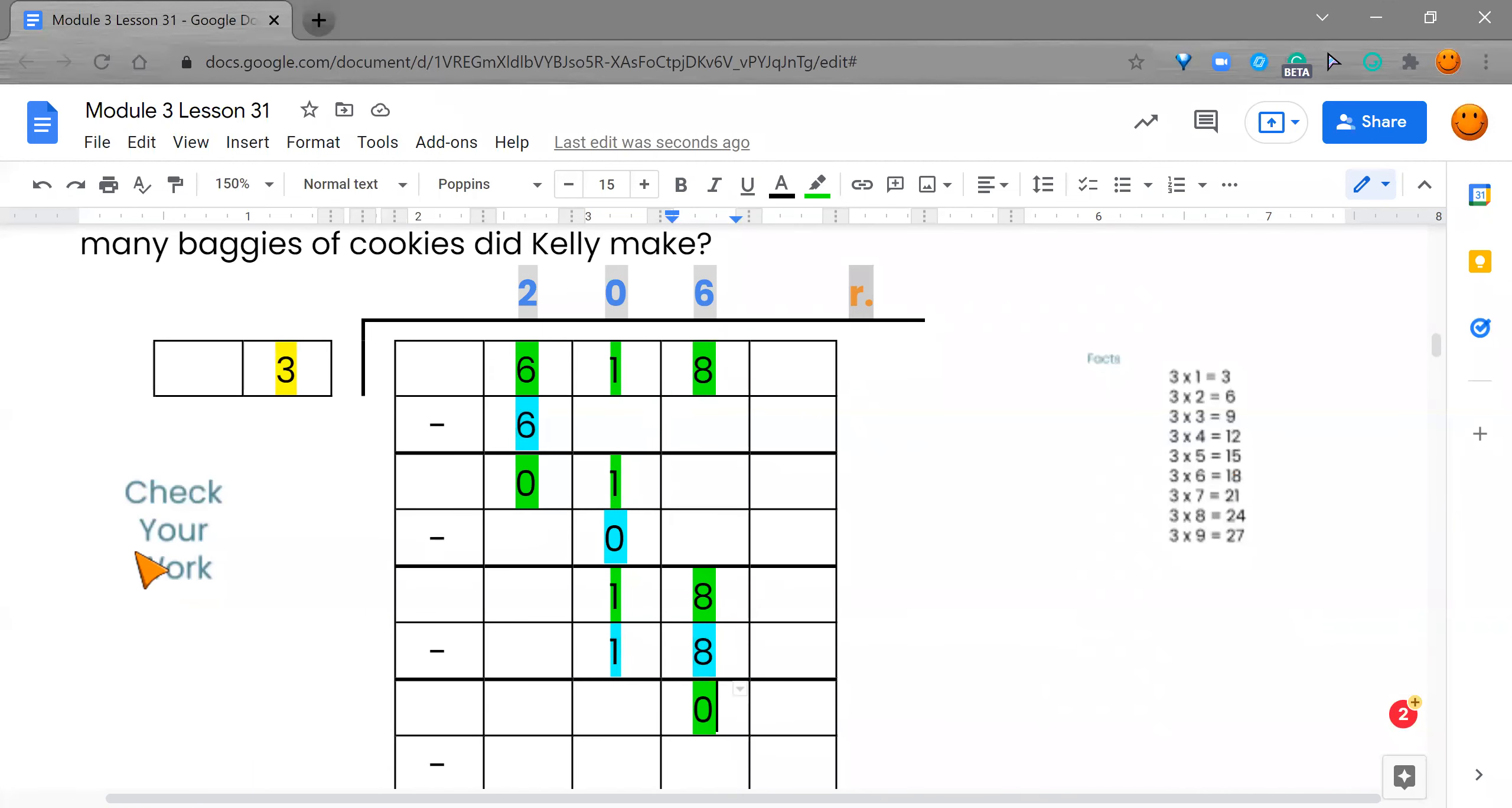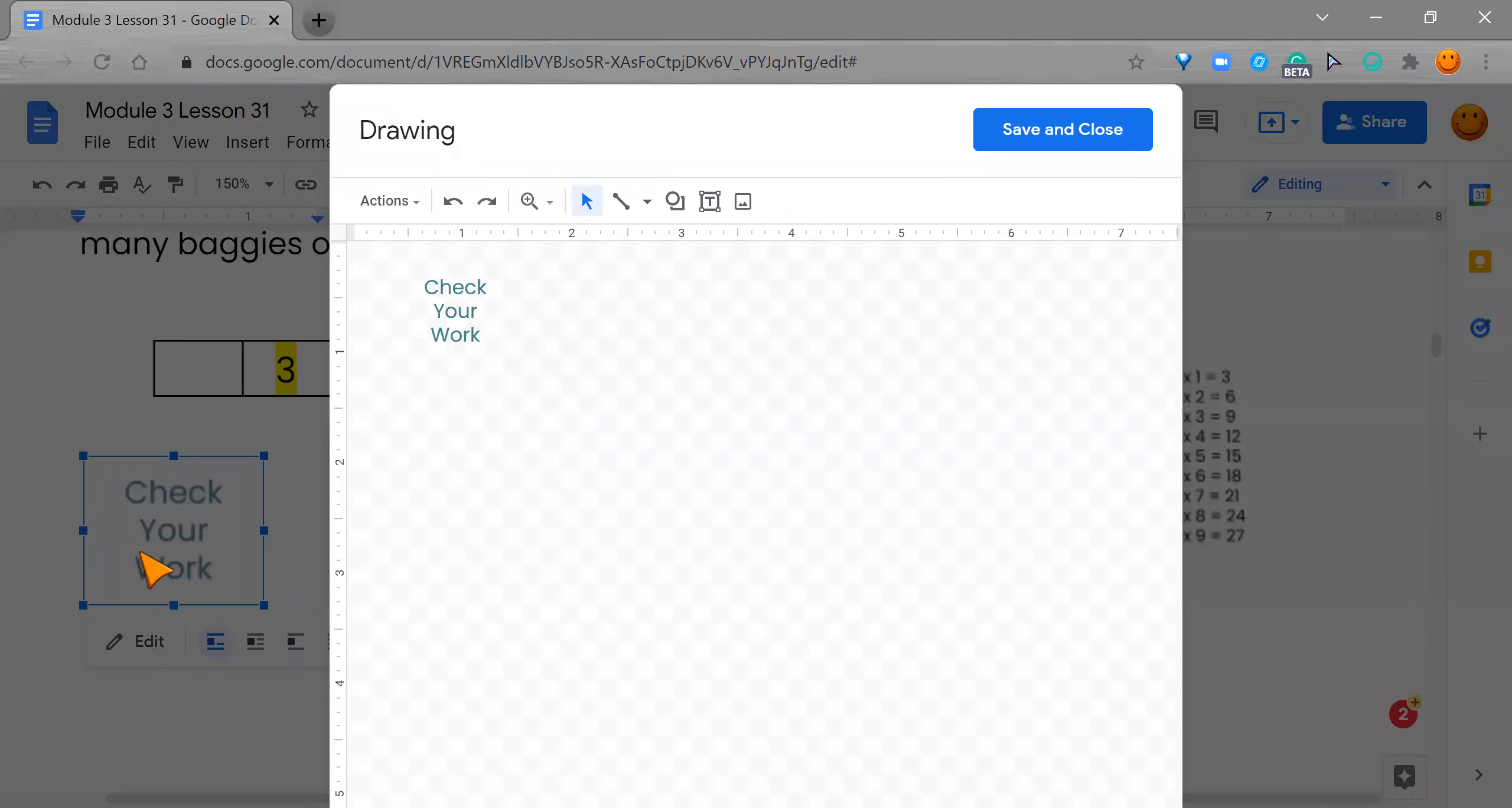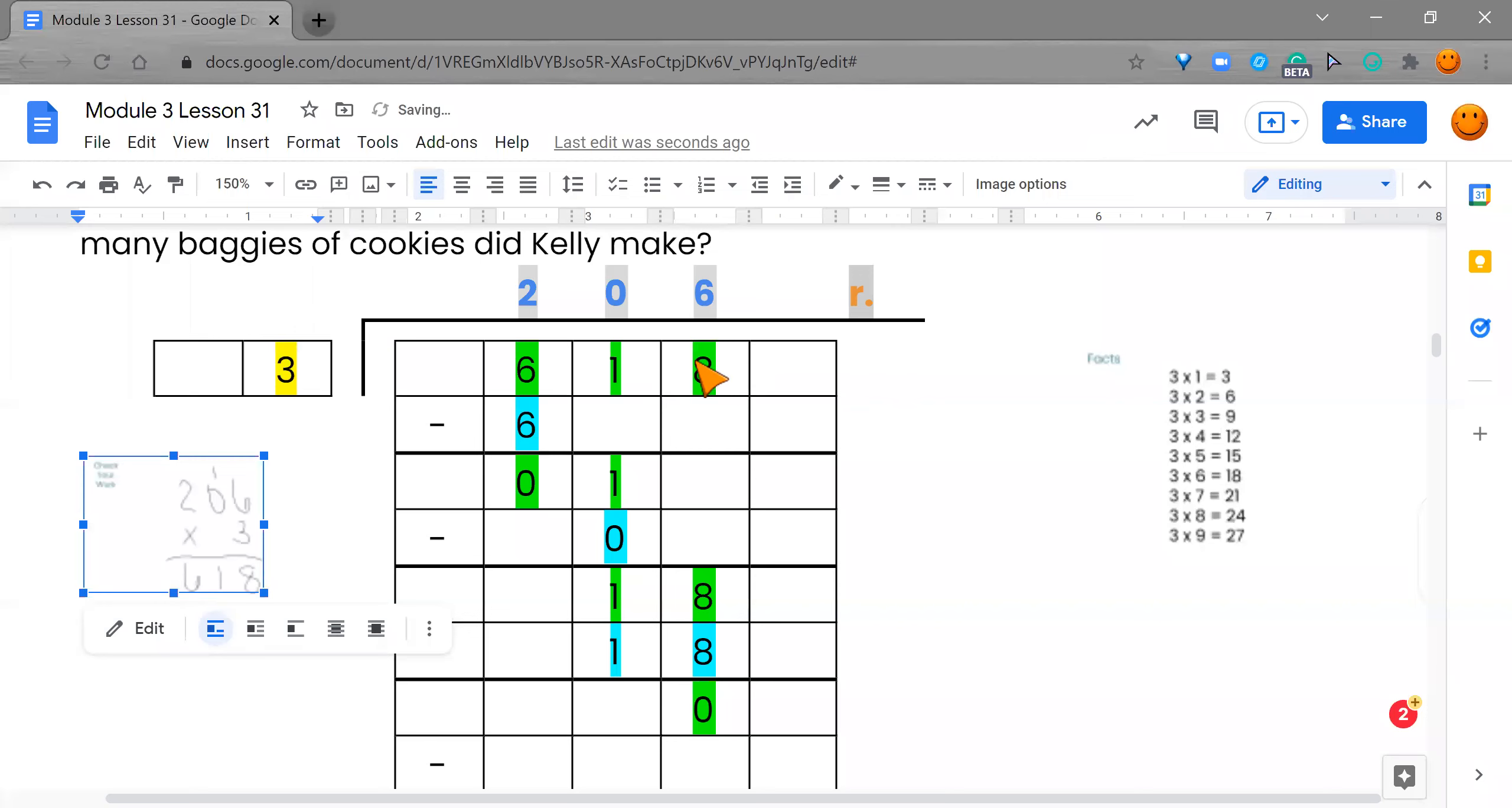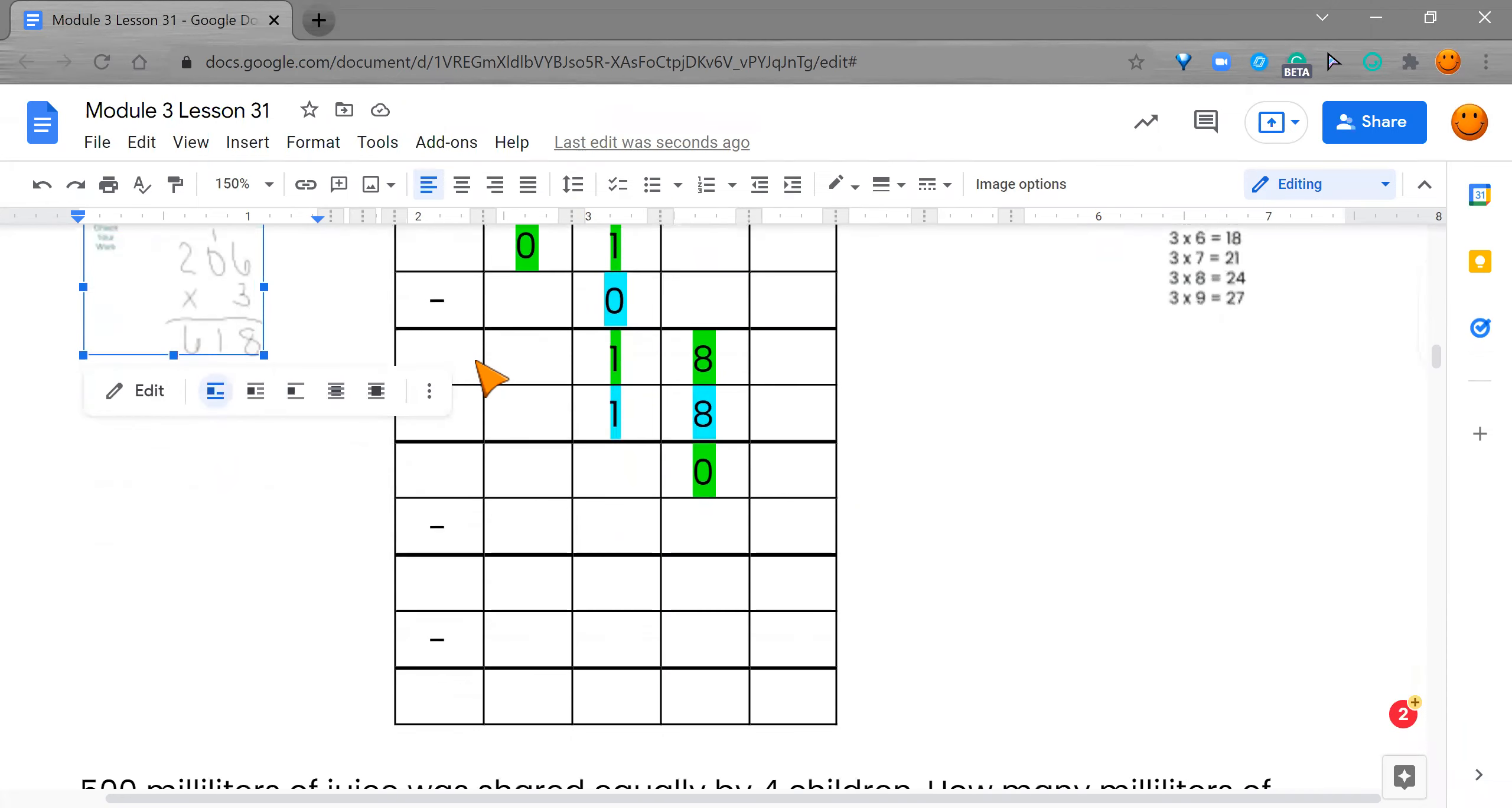Okay, and I do believe I said 206 baggies. And we're going to multiply this by three and see if this is what my dividend is. So I'm going to do three times six. It's 18. So I drop my eight, carry my one. Three times zero is zero. Plus one is one. And then three times two is six. Is 618 how many cookies we started off with, you guys? Yes, it is. Look, we did an amazing job. Thank you so much. So let's go to the next one.